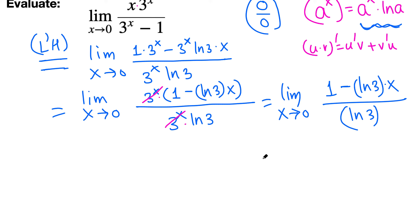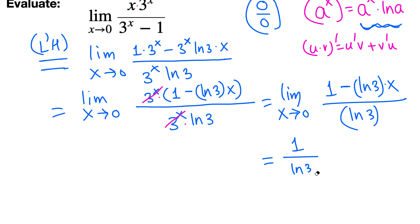Now we just plug in x equals 0. On the top, 1 minus ln 3 times 0 — since 0 times any number is 0 — gives us 1 minus 0, which is just 1. On the bottom, there is nothing to plug in, it's just ln 3. So the final answer is 1 over ln 3.